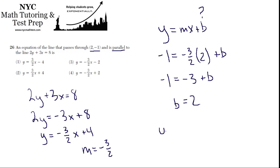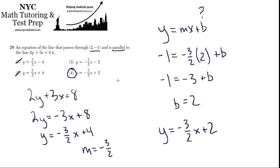So the final equation should be y equals negative 3 over 2x plus 2, which is choice 4. And even if you hadn't found the y-intercept yet, as soon as you get that slope you know it can't be choices 1 or 2, because the slope has to be negative 3 over 2. Then once you know the y-intercept is 2, choice 4 is the best answer.